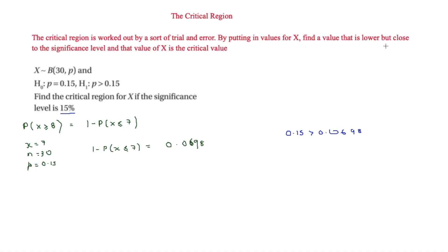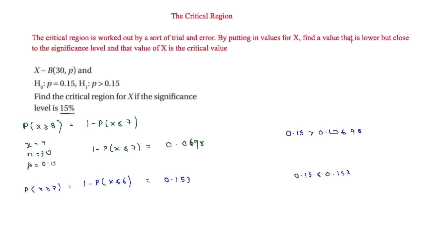This time we try P(X ≥ 7), which equals 1 − P(X ≤ 6). Using x = 6 instead of 7, we get 0.153. This time 0.15, our significance level, is less than 0.153 — just. So this value is not lower than the significance level; it is greater. So this is not our critical value.